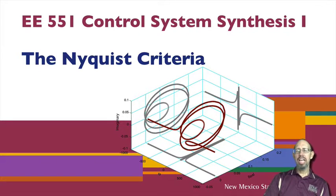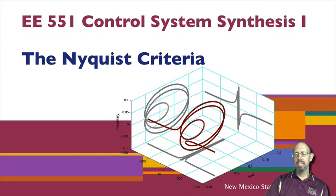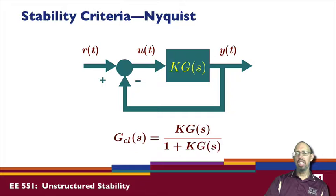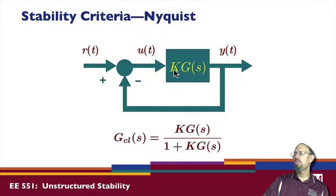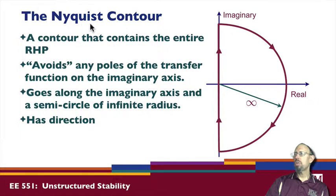We're going to take a look at the Nyquist criteria and how that relates to stability — stability in the sense that we may have an uncertainty. In general, with the Nyquist stability criterion, we may have some K, which may be a controller gain like a proportional gain, times our transfer function in the loop, which gives us a closed-loop transfer function. We want to know, for a particular value of K, if the closed-loop system is stable given knowledge of the open-loop system. To do this, the Nyquist criteria requires something called the Nyquist contour.